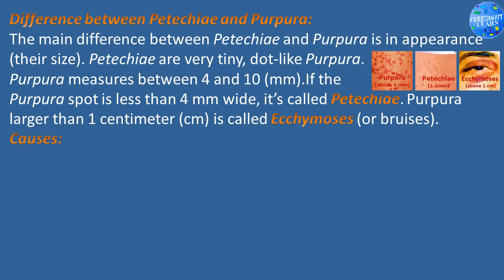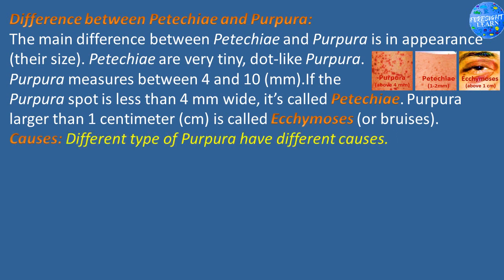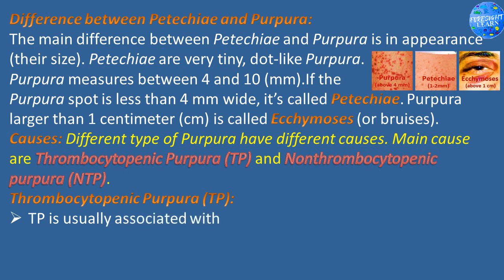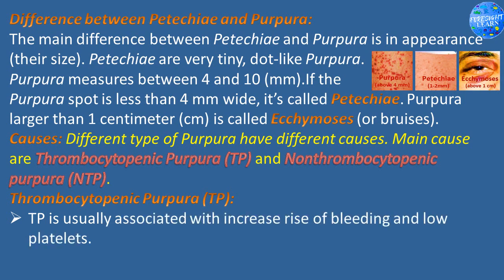Causes. Different types of purpura have different causes. The main causes are thrombocytopenic purpura (TP) and non-thrombocytopenic purpura (NTP). Thrombocytopenic purpura (TP) is usually associated with increased risk of bleeding and low platelets.